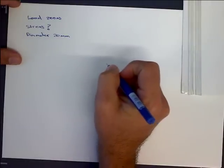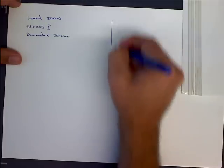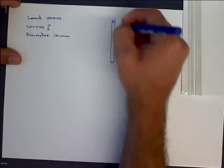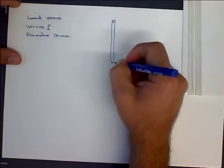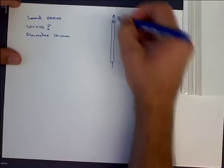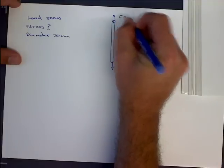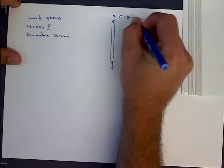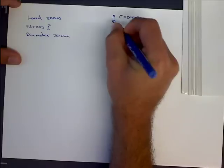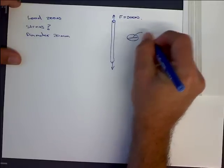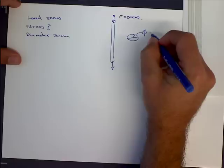Now with all these kinds of questions I like to just draw a diagram. So this is a cable and it's got a tensile load so it's going to be pulled in tensile with a load or a force of 200 newtons and the cross-sectional diameter is 20 millimeters.